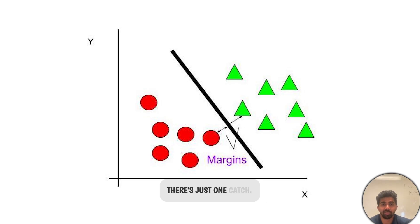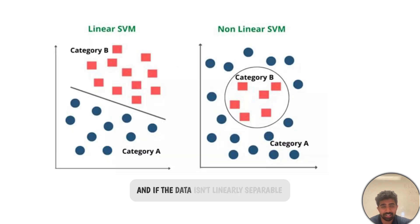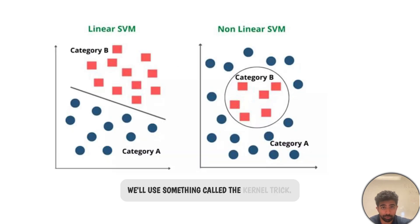There's just one catch: the data has to be linearly separable. If the data isn't linearly separable, we'll use something called the kernel trick.